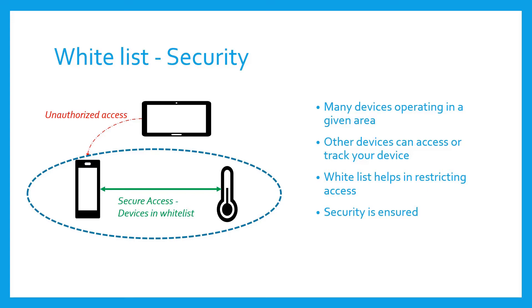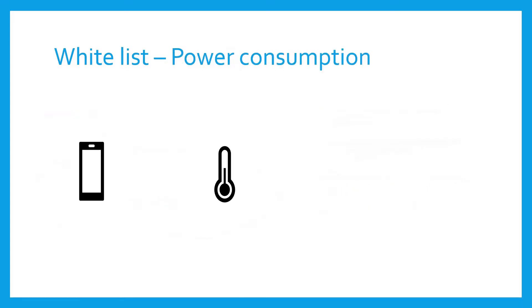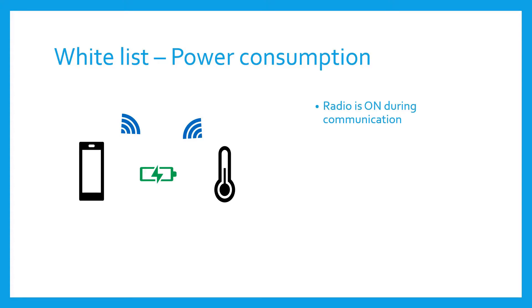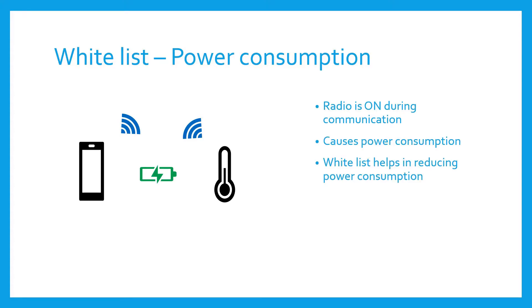Second is that every time there is any interaction between devices the radio is turned on, which means power is getting consumed. Let's understand in detail how the whitelist helps in reducing power consumption.